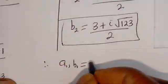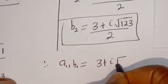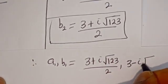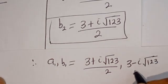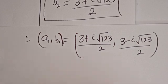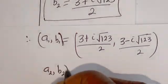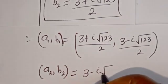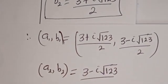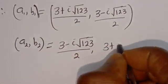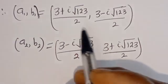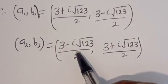Therefore, (A1, B1) is equal to ((3 plus i√123)/2, (3 minus i√123)/2). Also, (A2, B2) is equal to ((3 minus i√123)/2, (3 plus i√123)/2). We can see that A1 equals B2, and B1 equals A2.